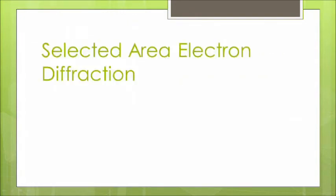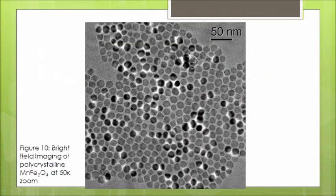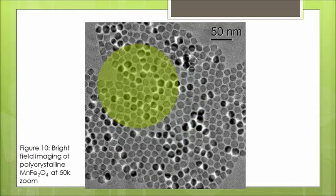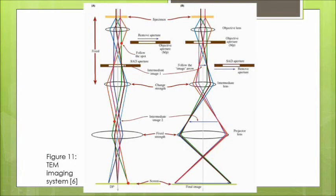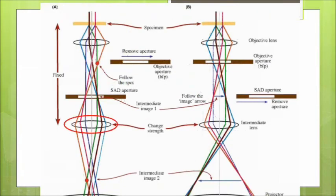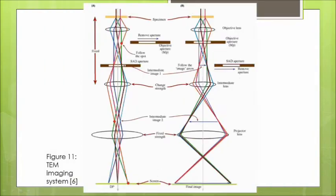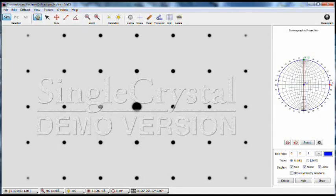Selected area electron diffraction is so-called because an area of the sample is selected for the diffraction imaging. To achieve this, the intermediate lens is adjusted until the back focal plane of the objective lens is focused on the screen. This is a free demo of single crystal from crystalmaker.com and it simulates the diffraction pattern of a sodium chloride crystal.